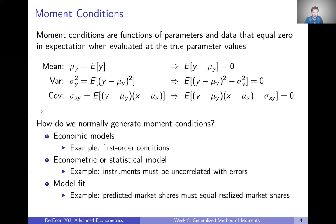Where do these moment conditions come from? They can come from economic models — in a lot of economic models we end up with first order conditions, which are just functions of parameters and data that equal zero, which is exactly our definition of a moment condition. Econometric or statistical models also give us moment conditions: for example, instruments must be uncorrelated with errors, which we can use to formulate a moment condition. We might also have model fit conditions, like wanting predicted market shares to equal realized market shares, which we can reformulate as moment conditions as well.